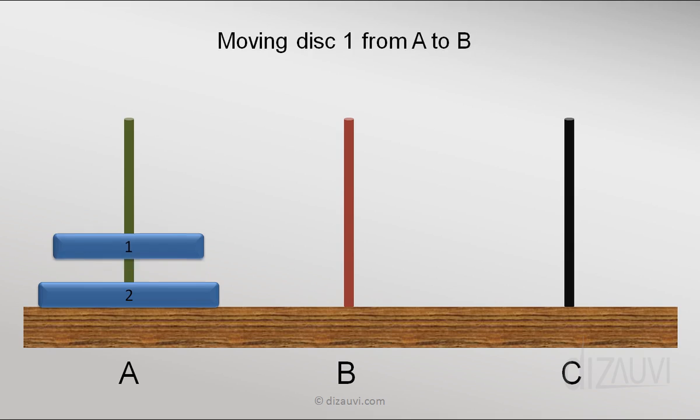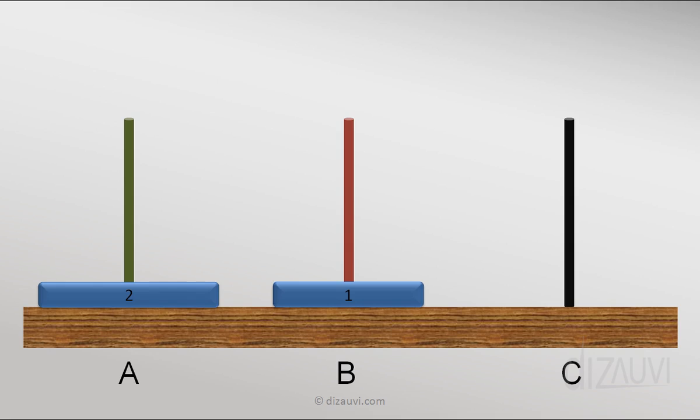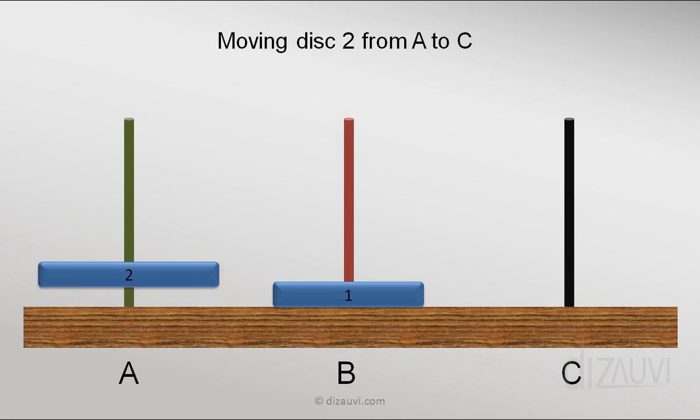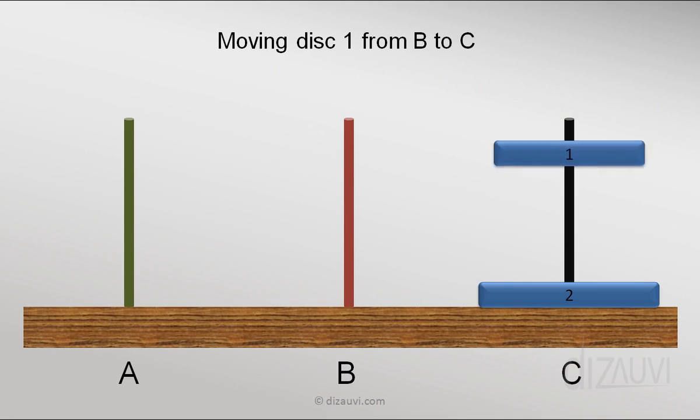We first move disk 1 from tower A to B. Then what do we do? Move disk 2 from tower A to C. And finally move disk 1 from tower B to C. And this was also quite simple and something which everyone can figure out.